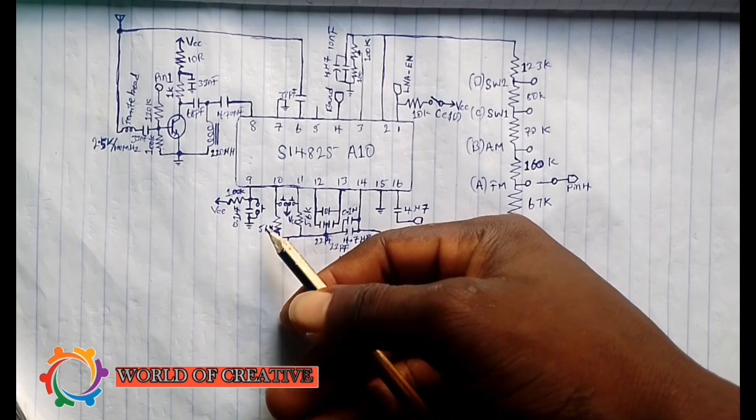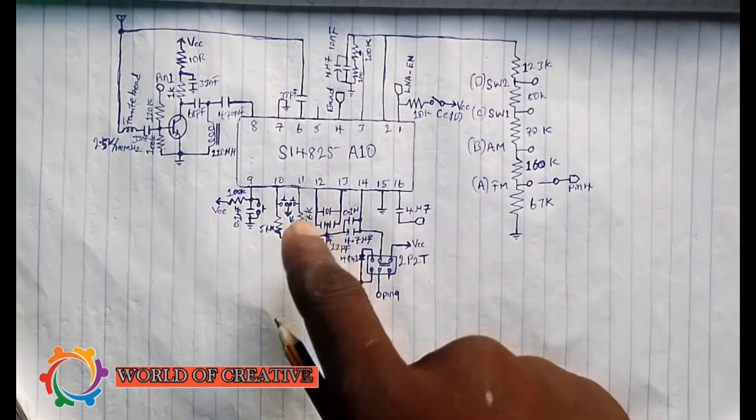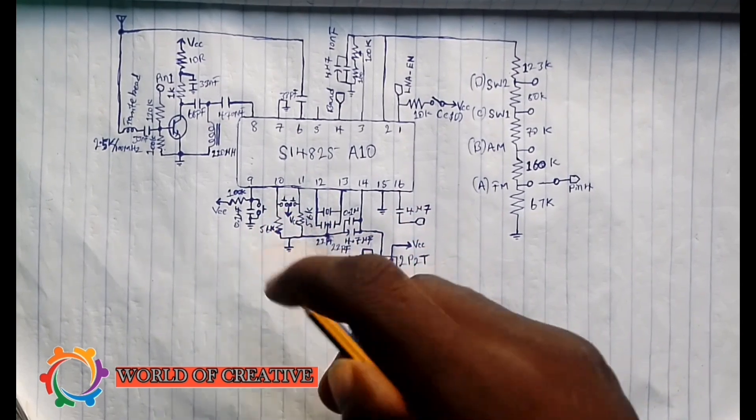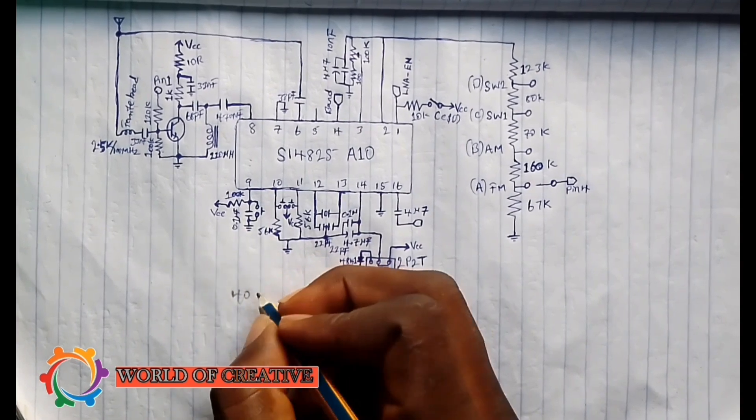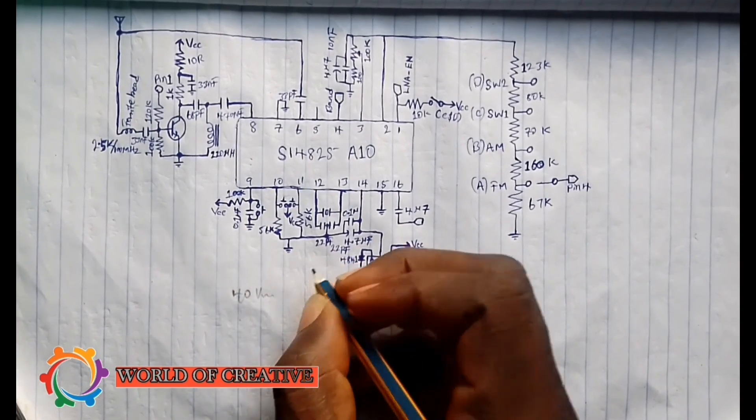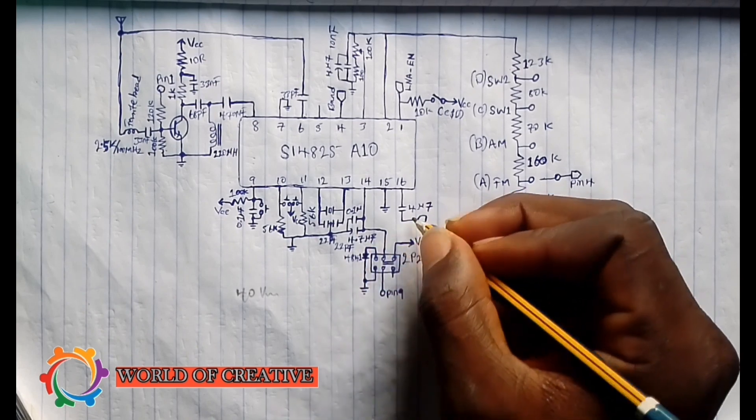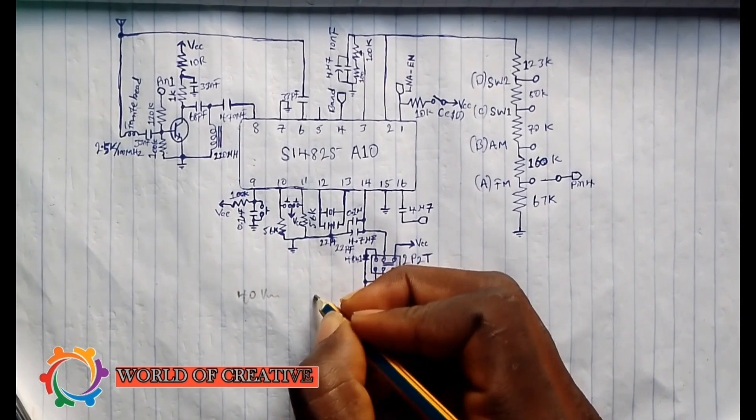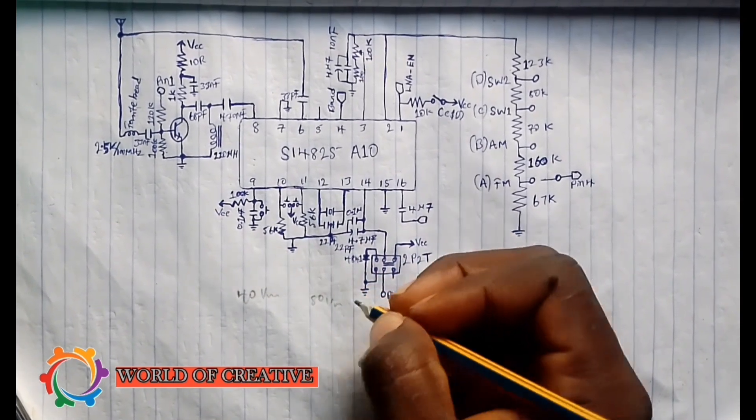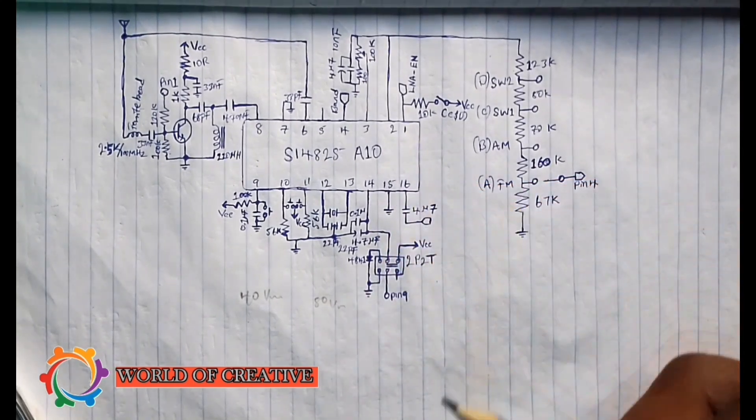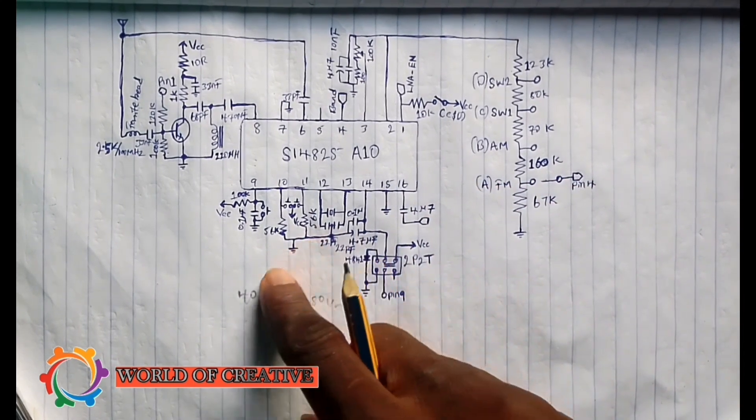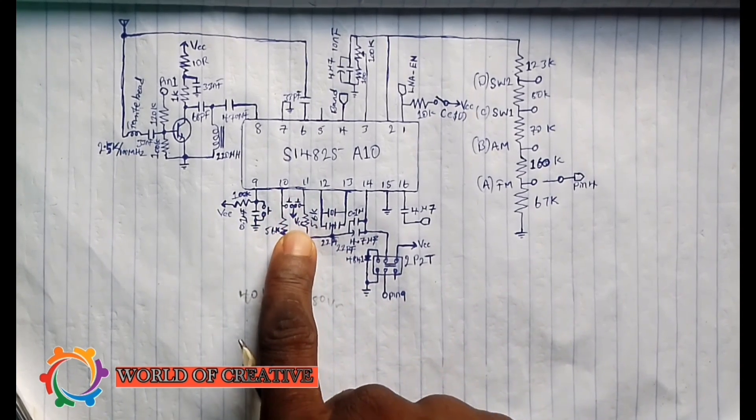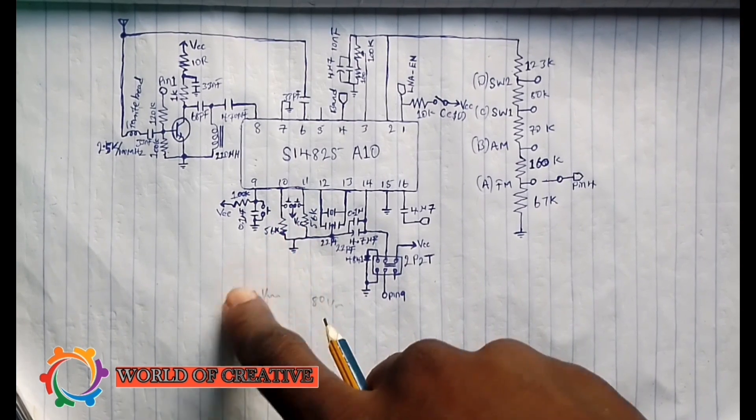The volume will pull up by 2 decibels. This means if there is 40 microvolts coming out from the IC, 40 microvolts audio signal coming out from the IC peak to peak, and you pull up, this will multiply by 2 and it will be 80 microvolts. So 2 decibels means it will multiply by 2. When you keep pressing it, it increases or decreases by 2 decibels. It has 32 steps, meaning you can press it 32 times before it reaches maximum or minimum.